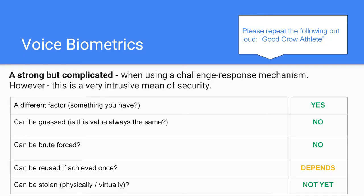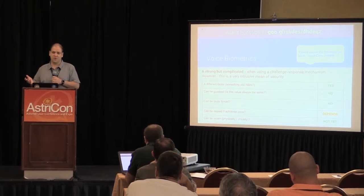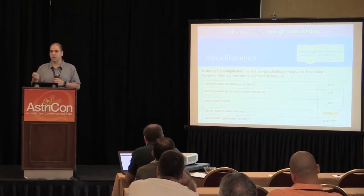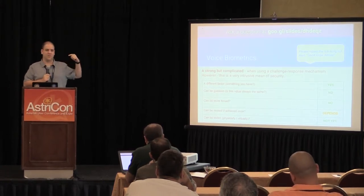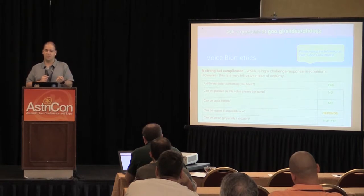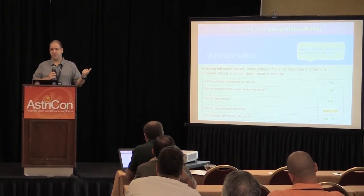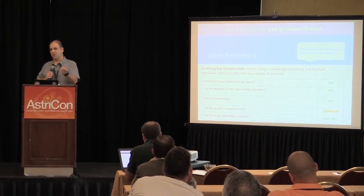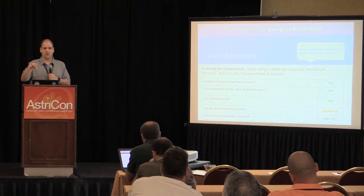Last but not least, you could use voice biometrics as a second factor. When I call my bank, they ask me to say a certain phrase out loud to verify it's me — they have my voice signature. This is a different factor, and I think it's currently the single factor that can't easily be stolen. When biometrics become more popular, people will try to record and synthesize voices, but I don't think we're there yet. It's the only method that is protected from physically being stolen.